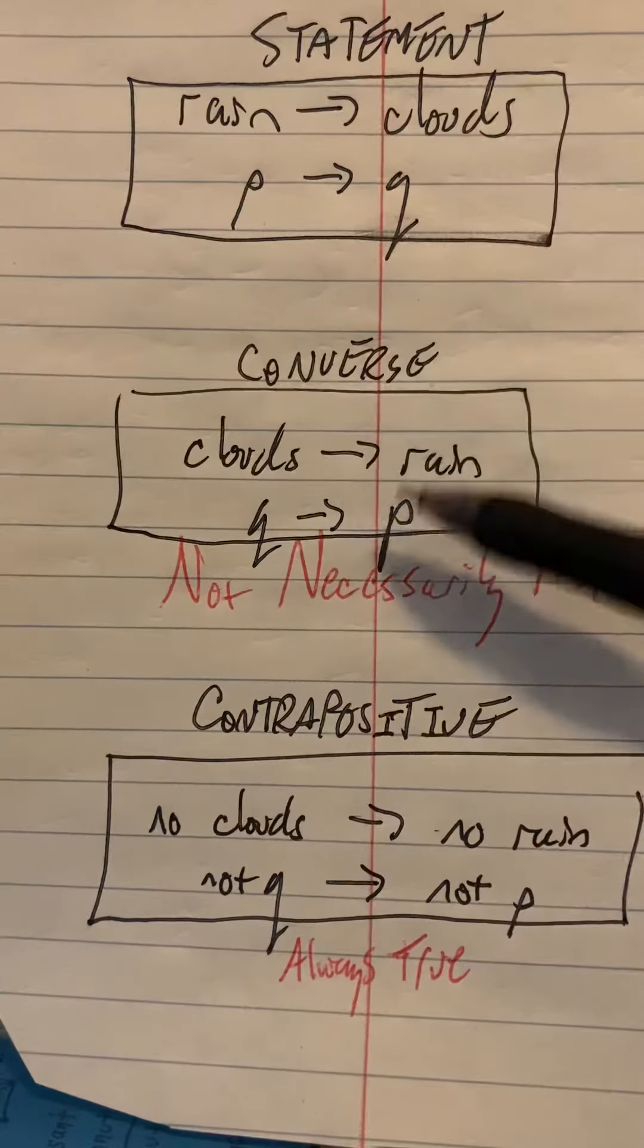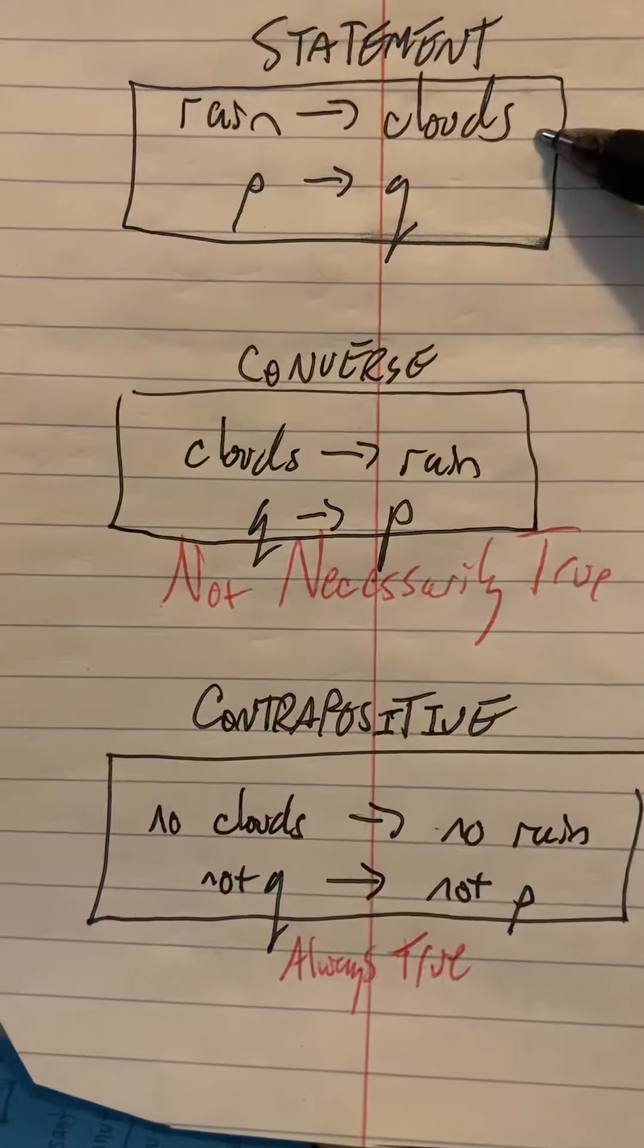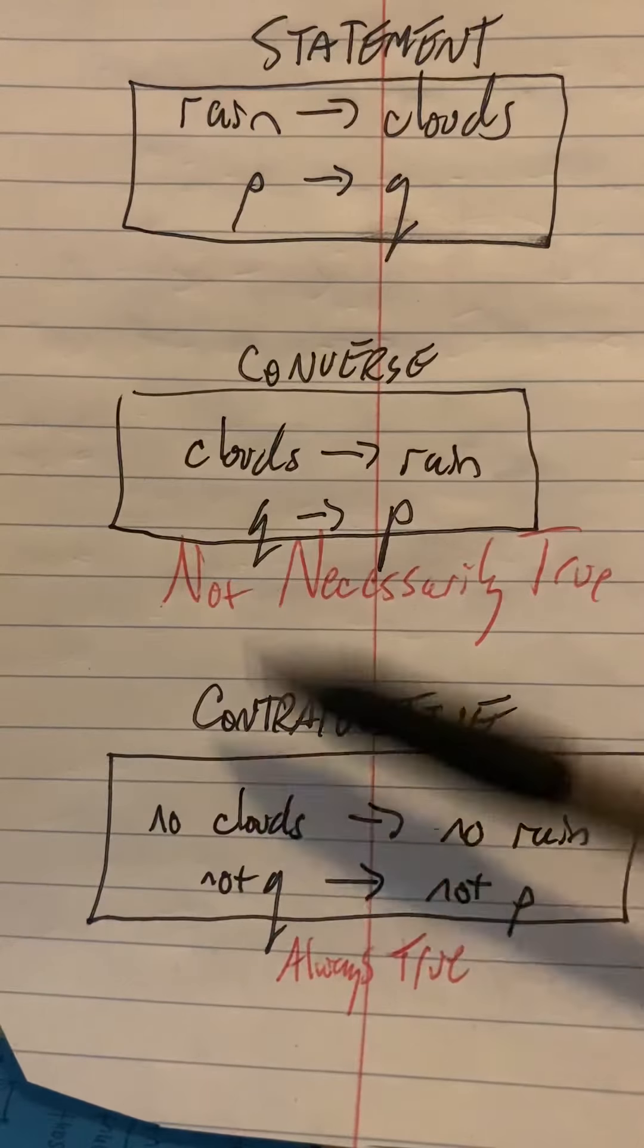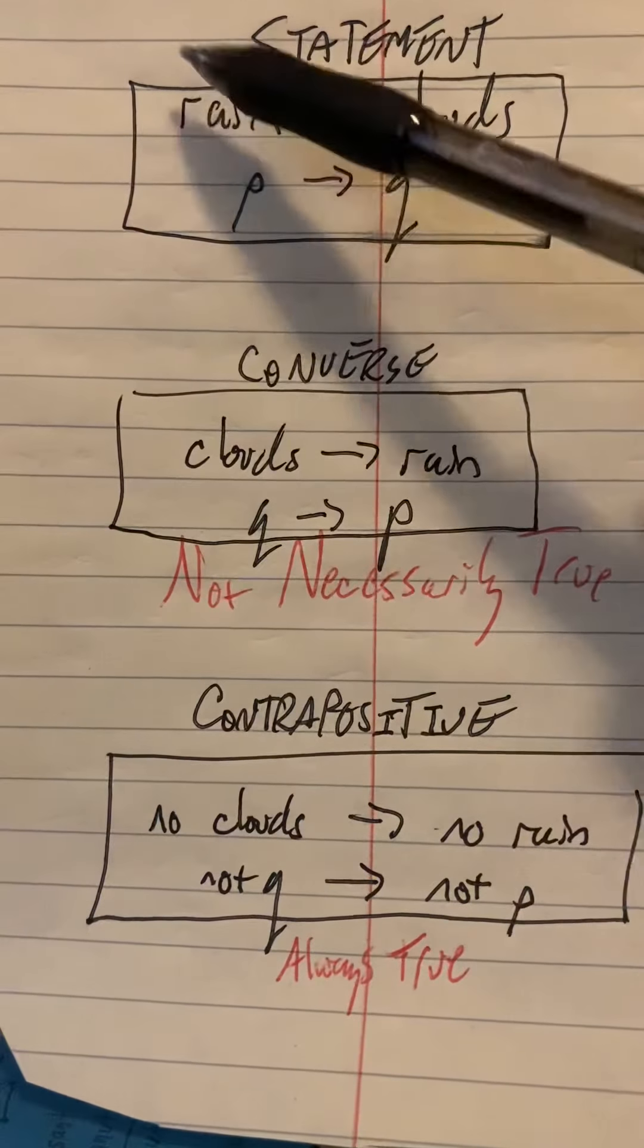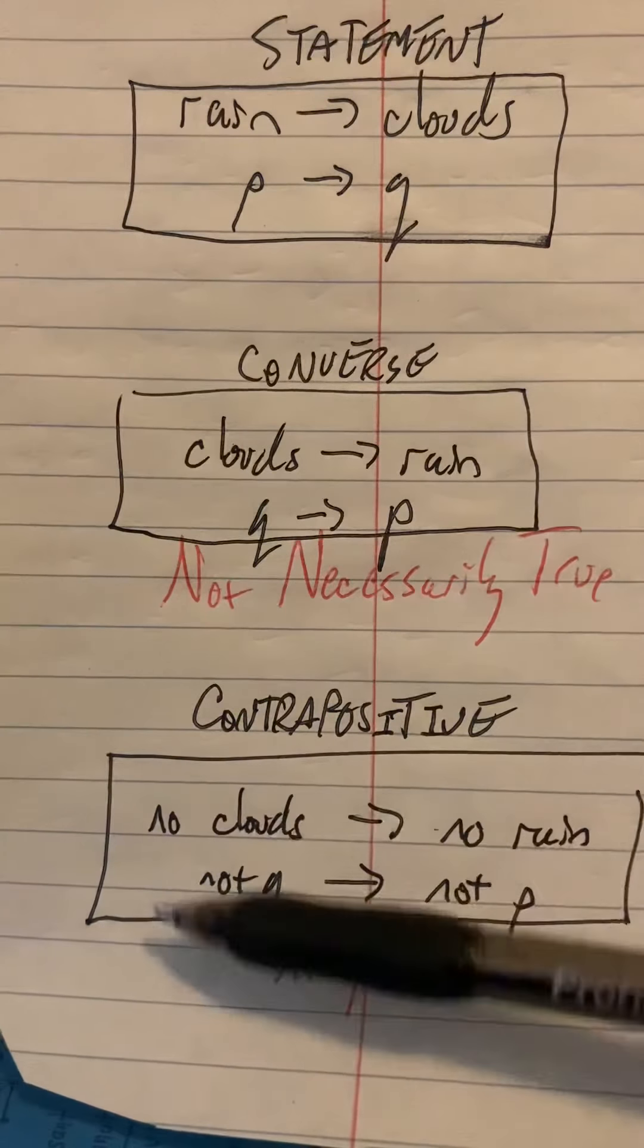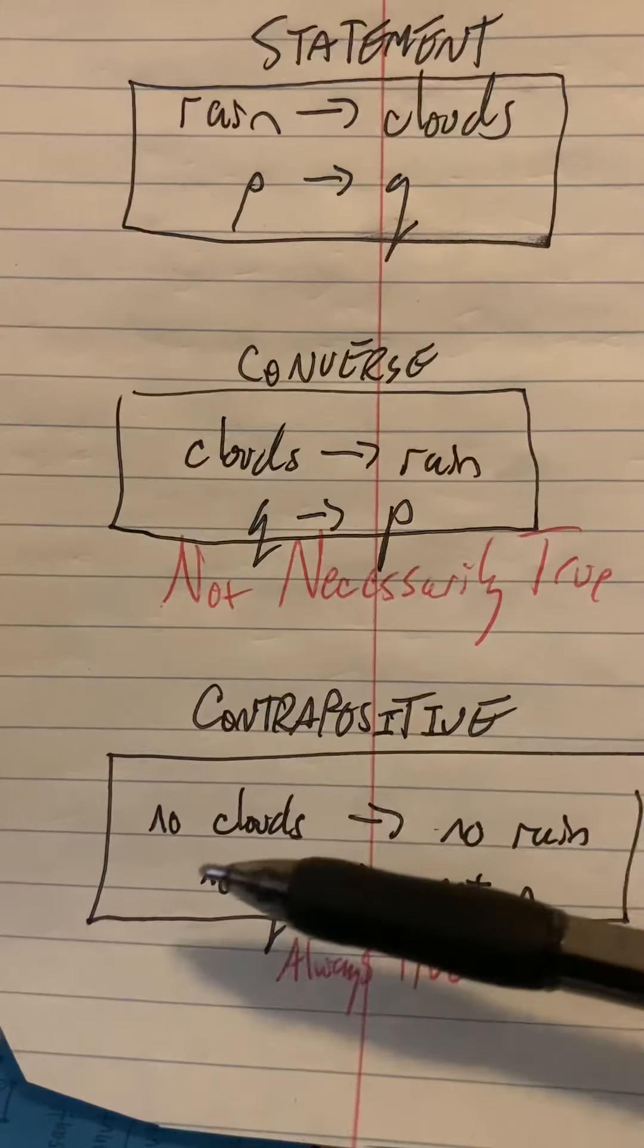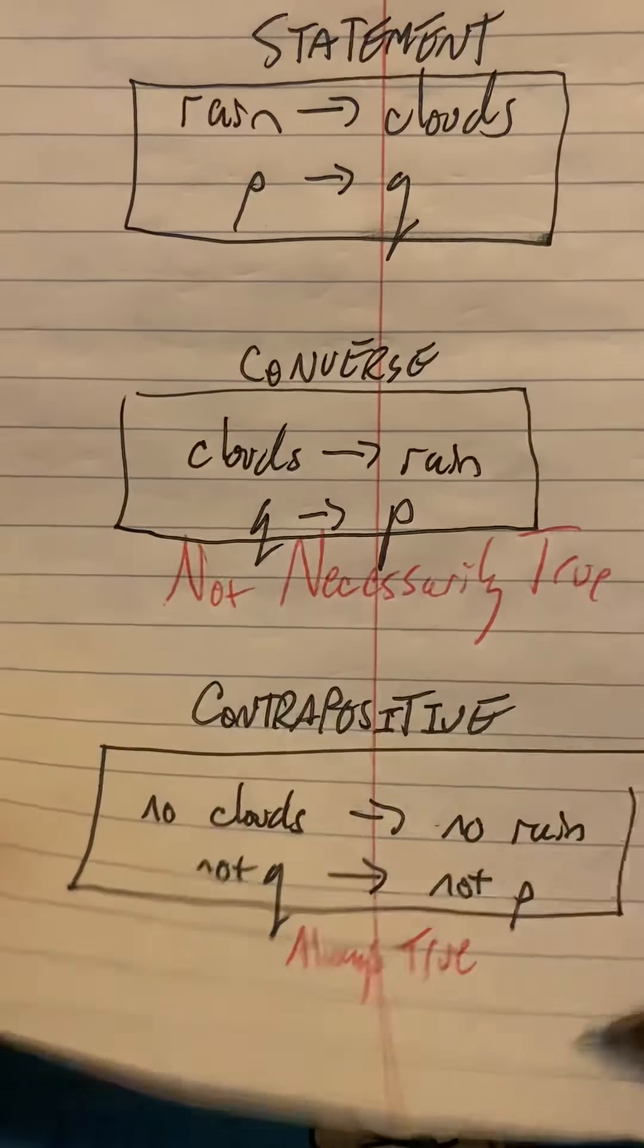The contrapositive of a statement, however, is always true. If the statement's true, the contrapositive is true always. So if there's no clouds, that's the negation of this, implies the negation of this. We flip-flop the order, put q over here and p over here, and we also negate them. So no clouds implies no rain. If there's no clouds, it's not raining. Not q implies not p, and the contrapositive of a true statement is always true.